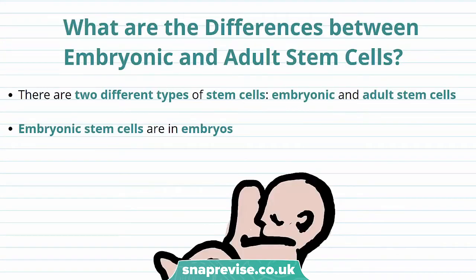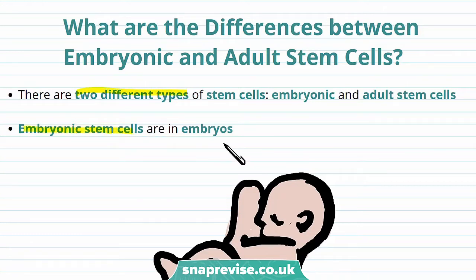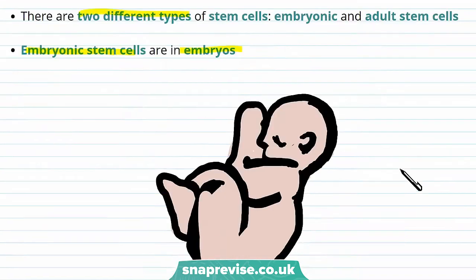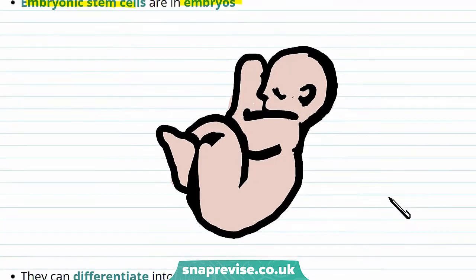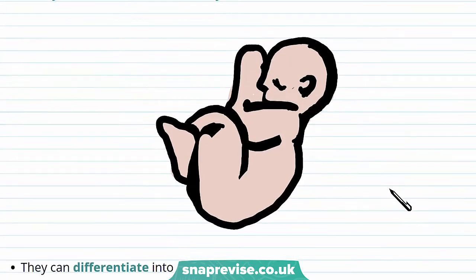There's not actually just one type of stem cell — there are two. We're going to look at the differences between embryonic and adult stem cells. The first type is called embryonic, and embryonic stem cells are in the embryos. An embryo is just an organism at an early stage of development before they're born, and this is where embryonic stem cells come from.